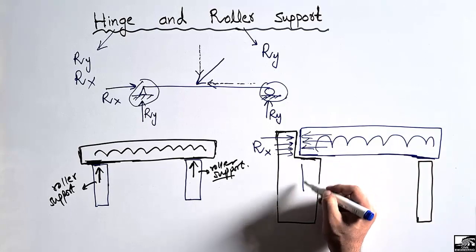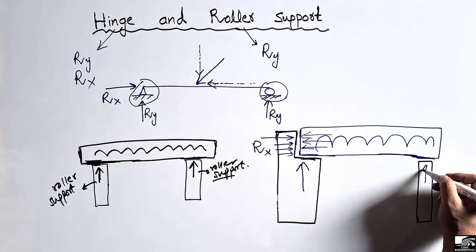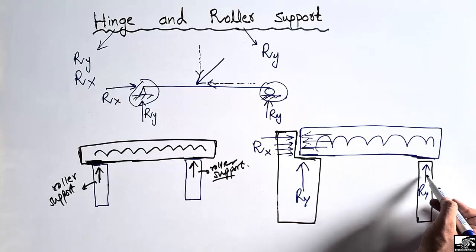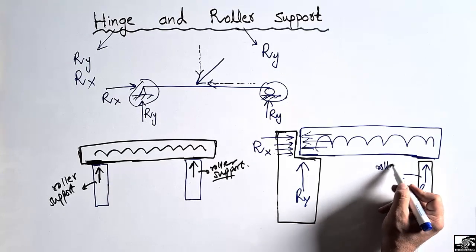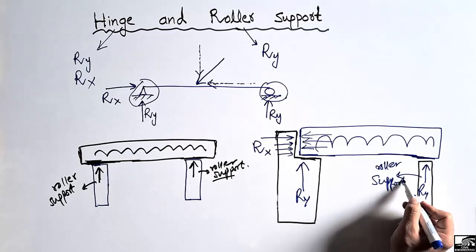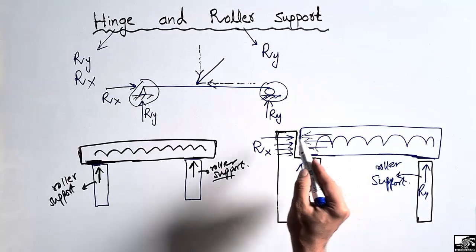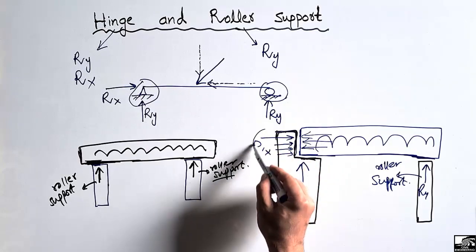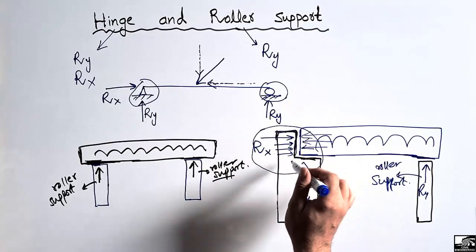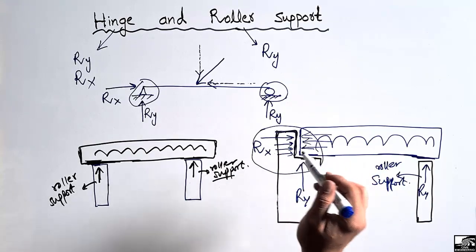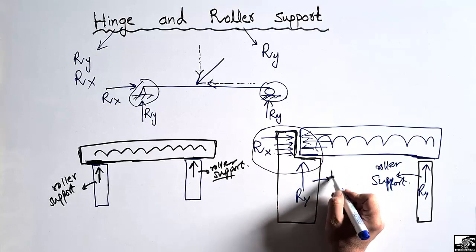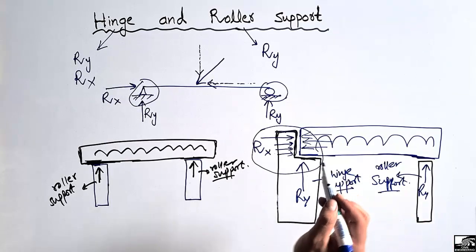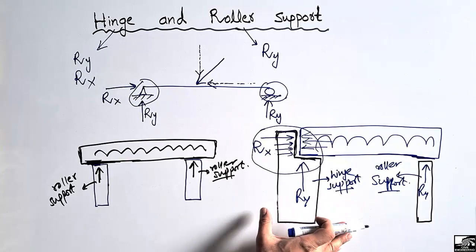The vertical load, or the self-weight of this beam, will be distributed between this column and this column, giving Ry and Ry. Now this support can only take the vertical load, so it will be called a roller support. The horizontal resistance is provided by this portion of the column to the beam, so we call that joint the hinge support. This column is the hinge support while the other is the roller support.